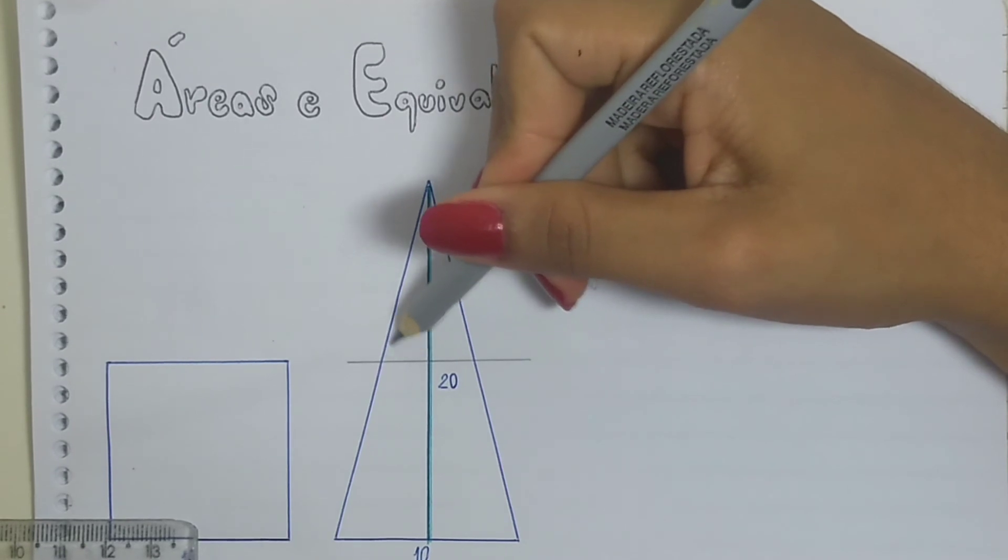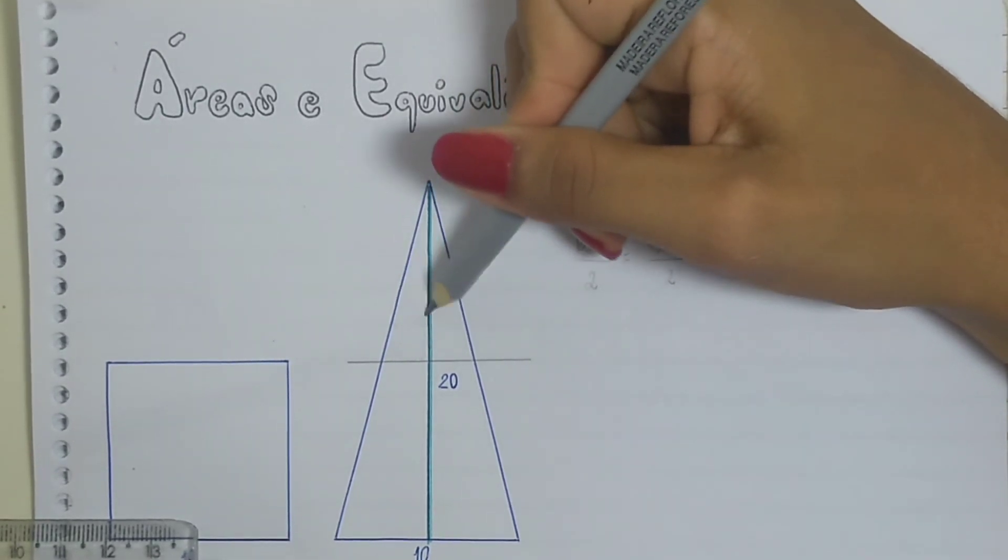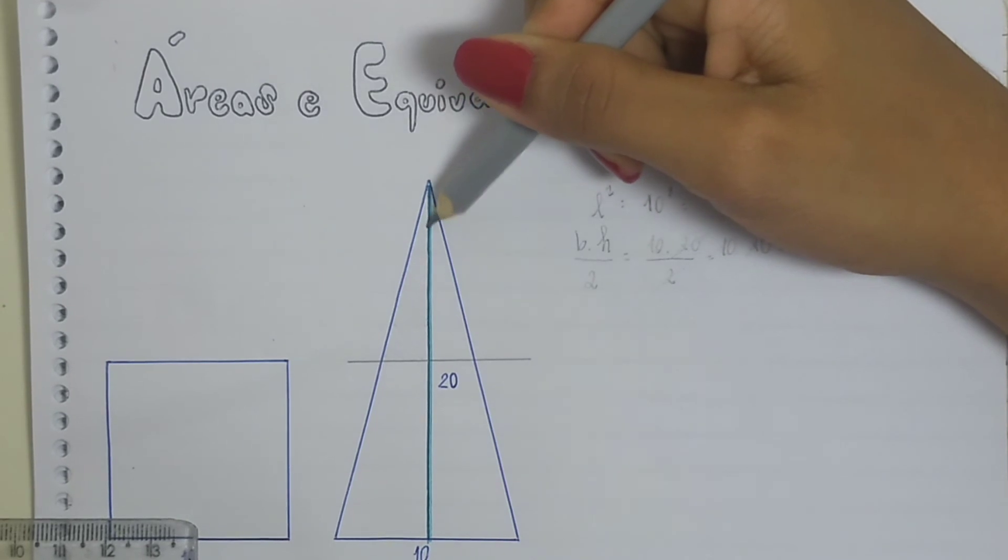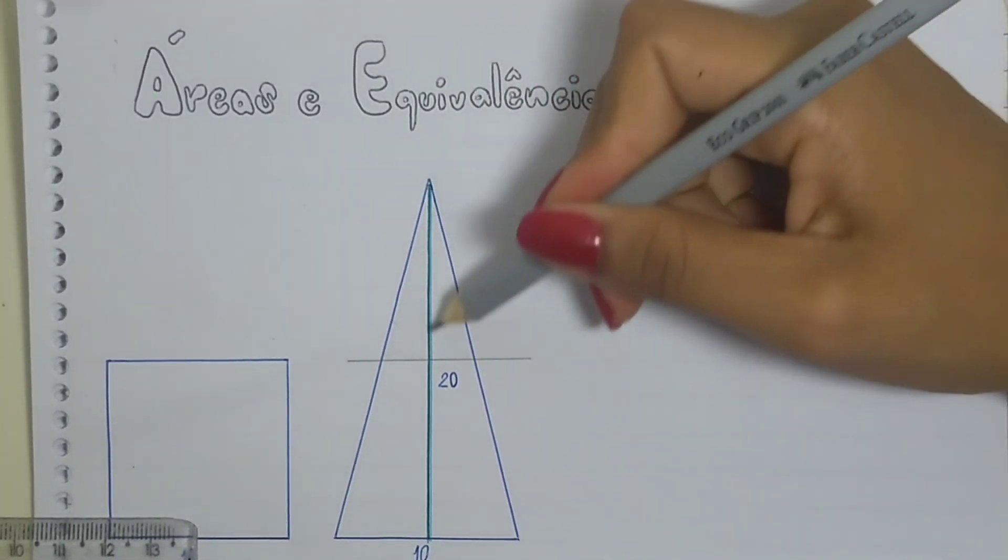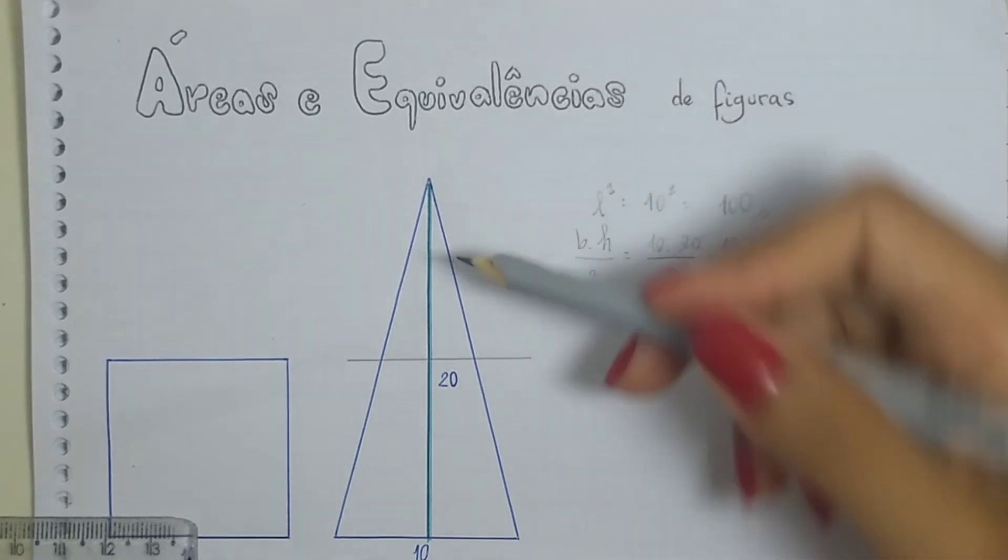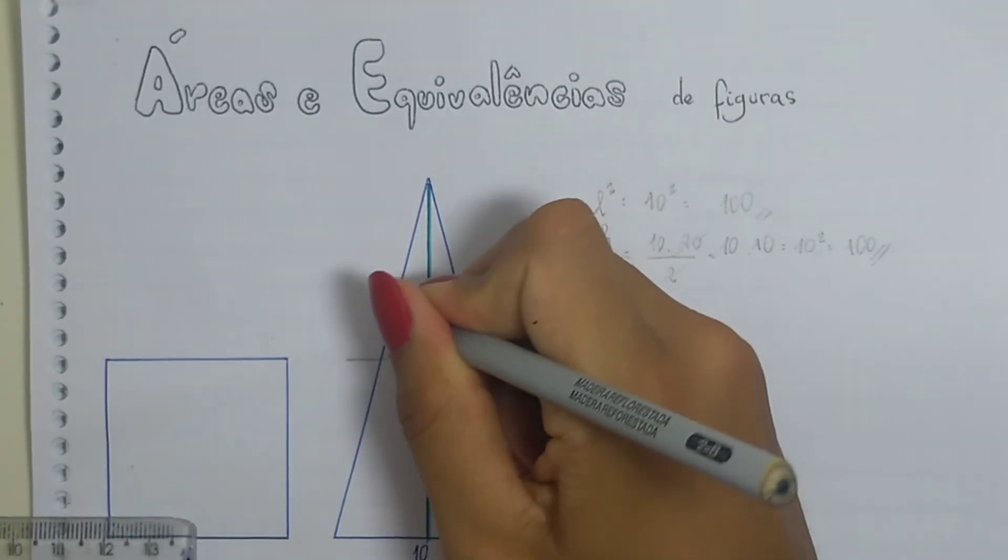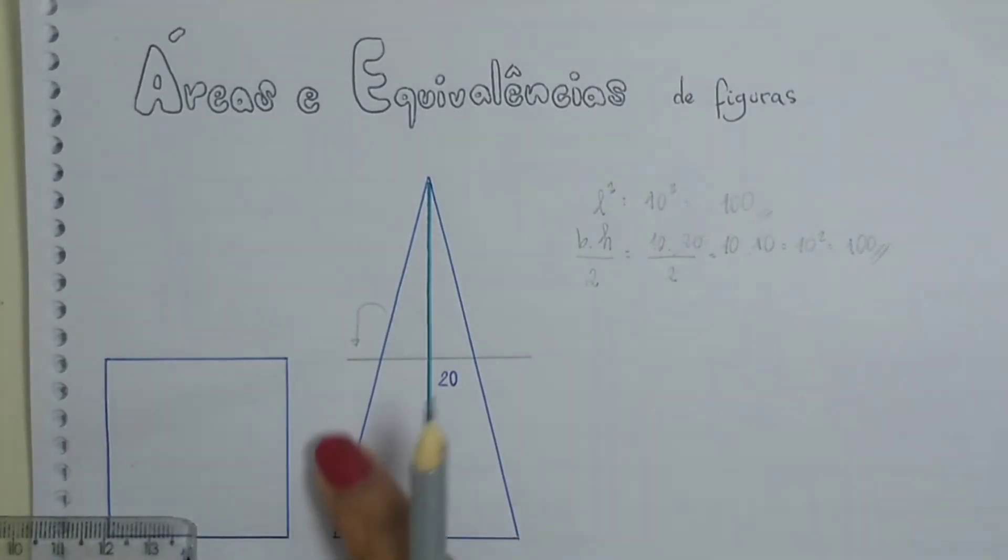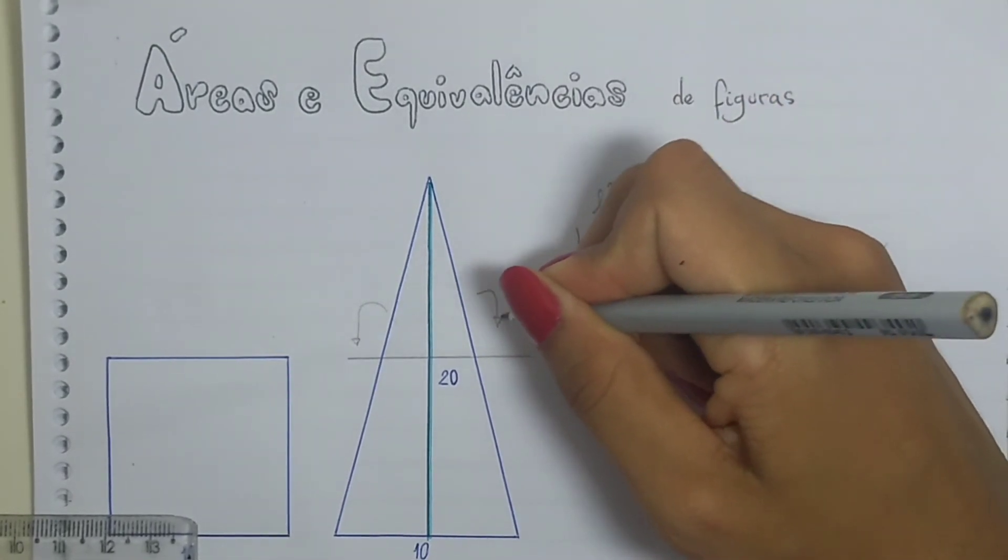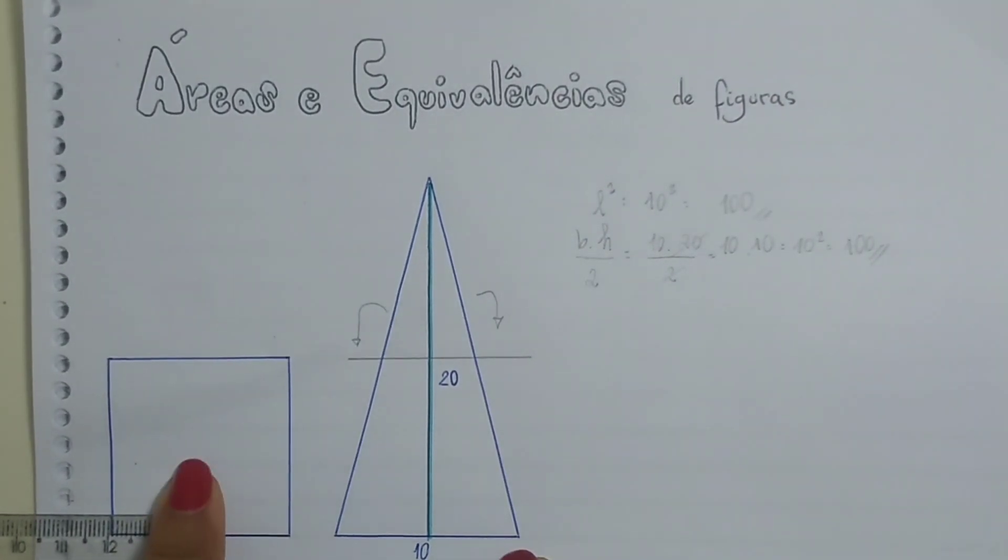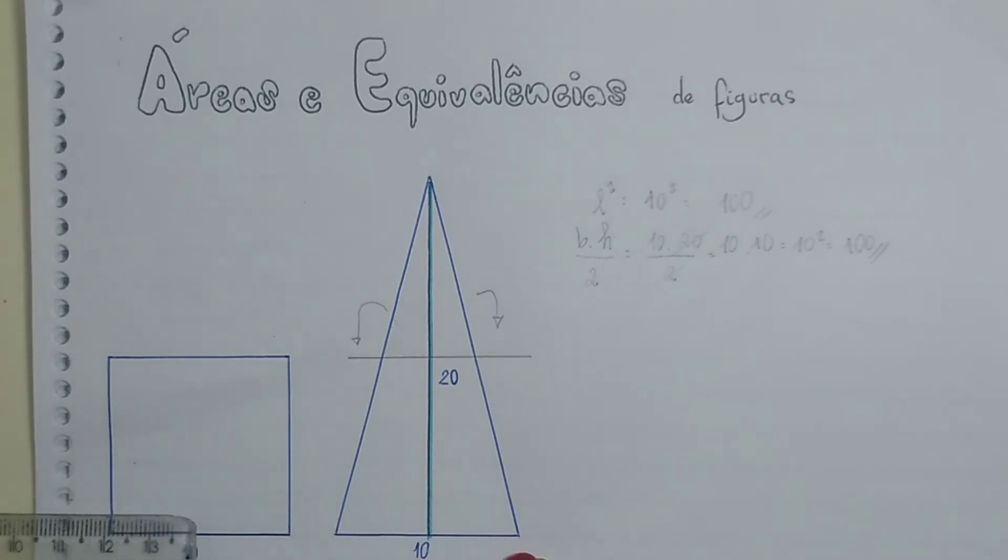This part that is here on top is a triangle too. If I divide right here in the middle, I will have two triangles. What can I do? If I fit this triangle here and take this other one and fit it right here, I will have this square again. This is proof that there is equivalence in these figures, ok? So, this is the first video. And, to close, we say that two figures or more figures are equivalent when they have the same area.